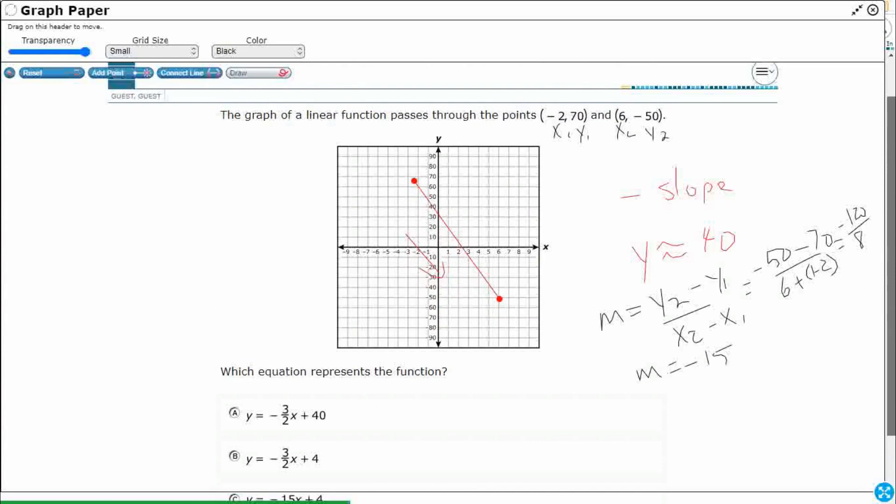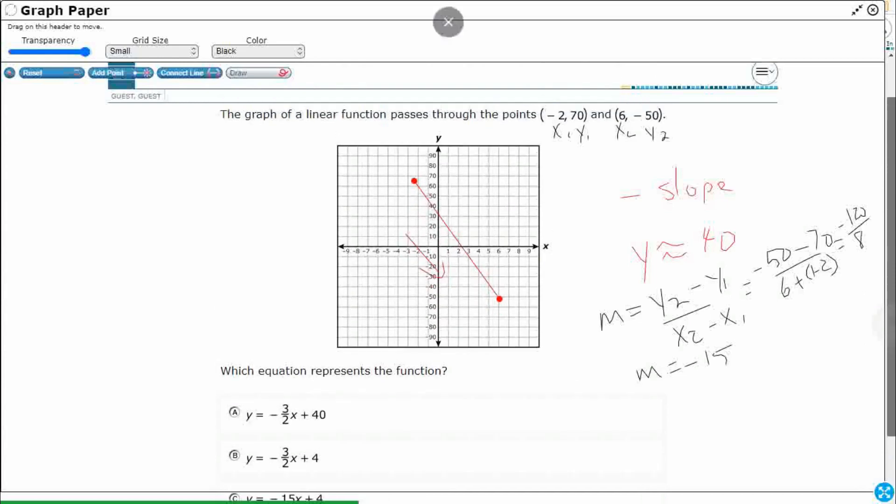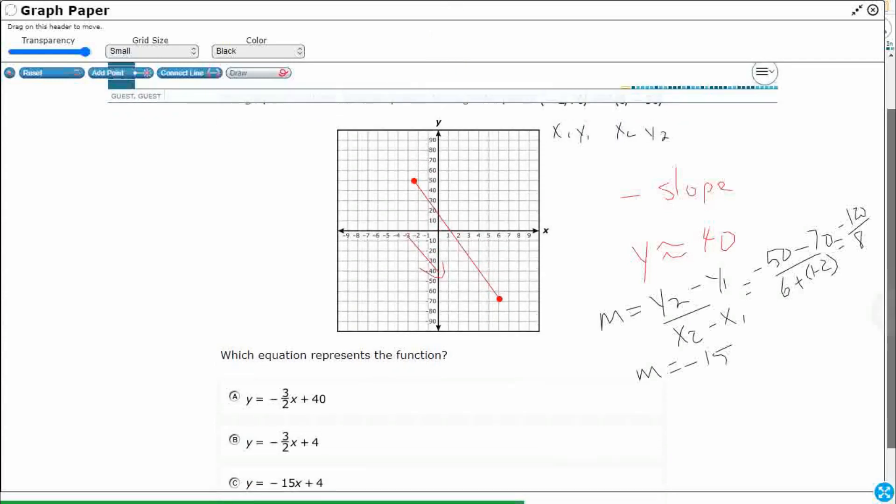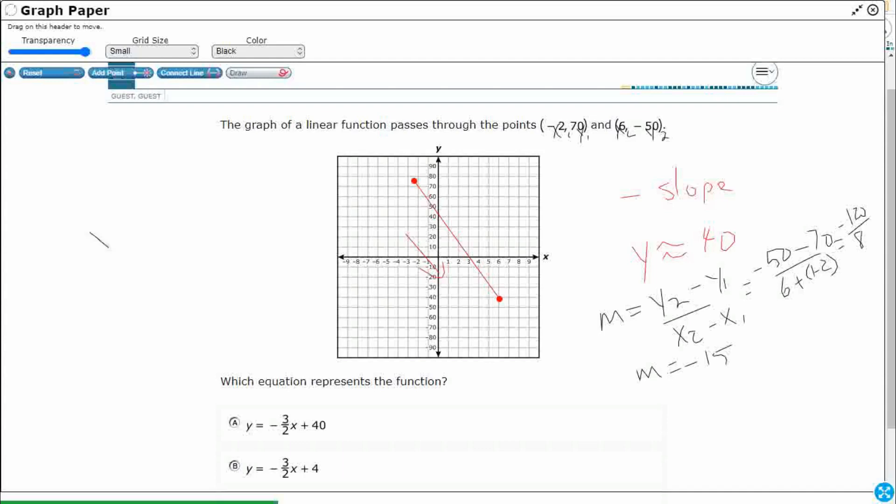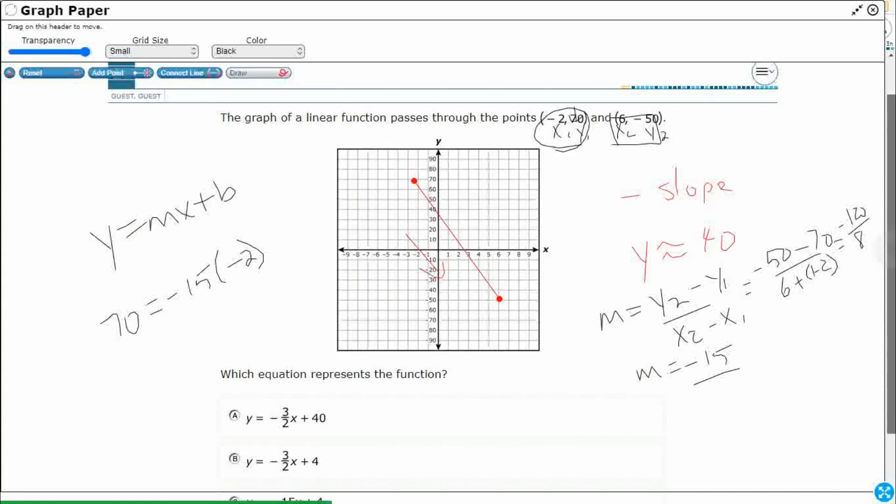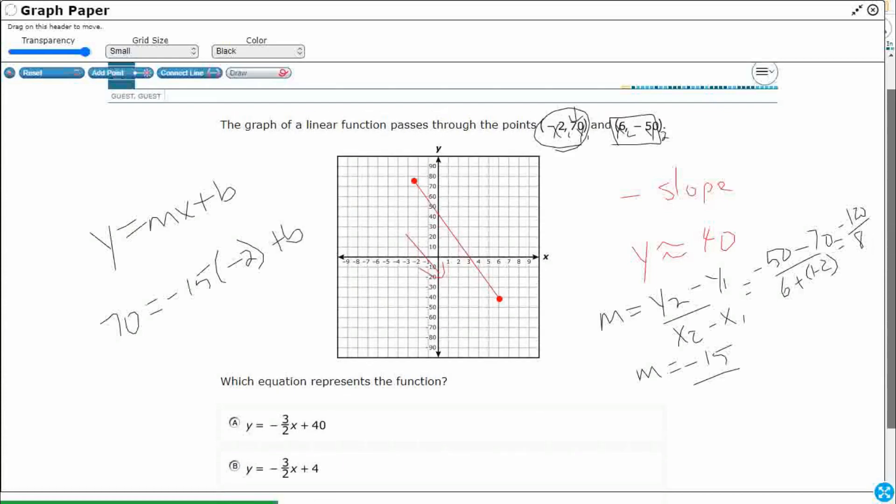But how do we know for sure what my y-intercept is? Since we have y equals mx plus b, and I know my m equals negative 15, I'm just going to substitute. Let's substitute in those points right there. So let's say my y equals 70, because that's that first point. My m equals that negative 15. My x is going to equal that negative 2. I need to match the x with the y. Plus b. I've got everything except for b. Let's solve for b.